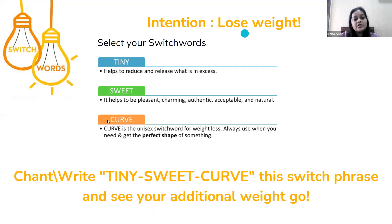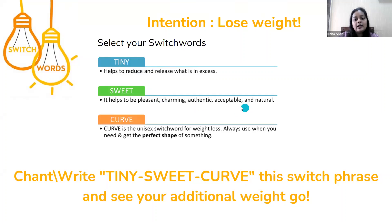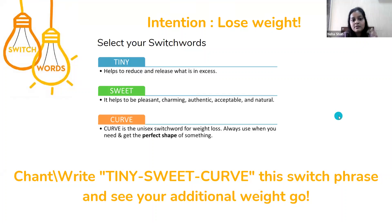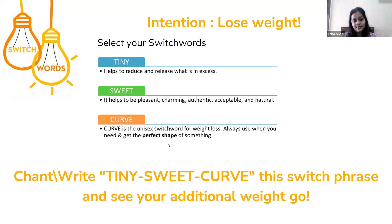We identified from the dictionary words that will help us lose weight. Tiny means to reduce or release whatever is in excess, so you don't want to become underweight — you just want to lose what is not good for your health. Sweet means pleasant, charming, authentic, acceptable, and natural — you want to lose weight naturally, not through artificial supplements or operations, but in a sweet, enjoyable way. And curve means to reduce and come to a perfect shape. That is why I picked tiny sweet curve.